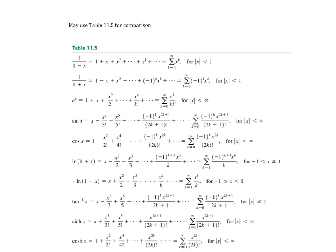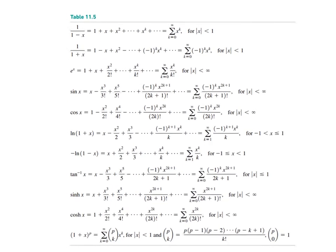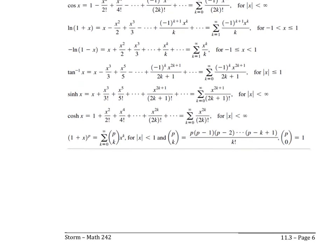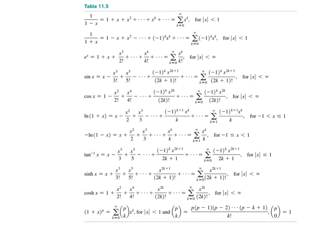The last thing to look at is Table 11.5, which you should keep handy. It lists common functions with their power series expansions and intervals of convergence: 1 over 1 minus x, 1 over 1 plus x, e to the x, sine of x, cosine of x, natural log, negative natural log of 1 minus x, arctangent, hyperbolic functions, and the binomial series. We'll use this table in section 11.4, where we move on to using these series to evaluate definite integrals and limits we couldn't evaluate previously.